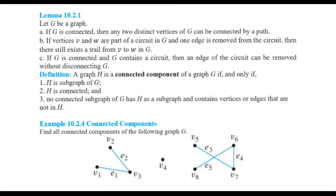Now let's see Lemma 10.2.1. This lemma says: if G is connected, then any two distinct vertices of graph G can be connected by a path. So based on the definition of connectivity, two distinct vertices of a connected graph can be connected using a walk, but this lemma claims they are also connected using a path — a walk with no repeated vertices and no repeated edges. The second part of this lemma says: if vertices V and W are part of a circuit in G and one edge is removed from the circuit, then there still exists a trail from V to W in graph G.